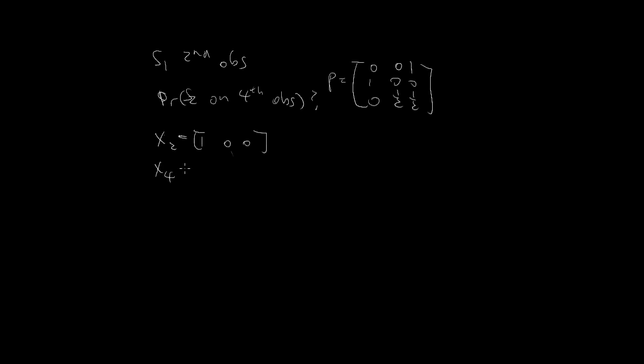And we're looking at x4 and we're looking for this number basically. That is the probability that it's on state 2 and the fourth observation. So x4 is x2 times p squared.